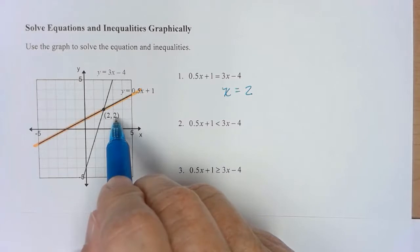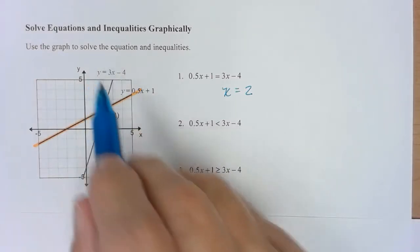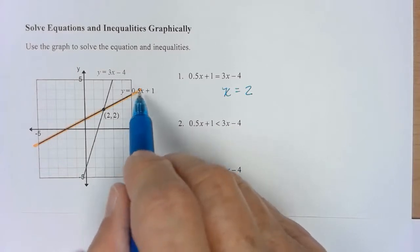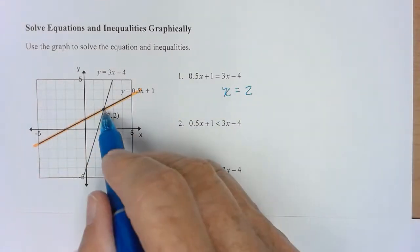The y value is just indicating if you put the x value of 2 in, that y value would be 2, and that's why they're equivalent. So this is called an intersection.